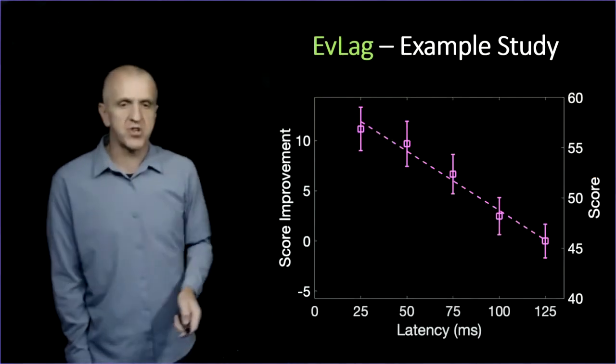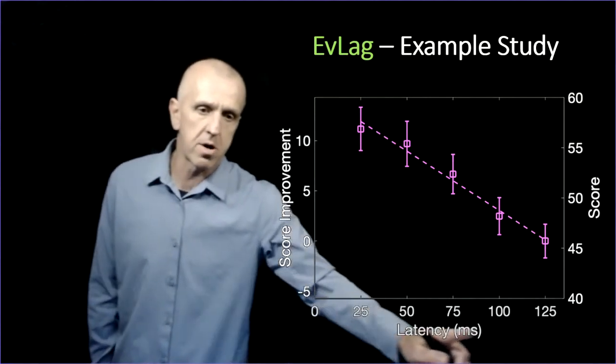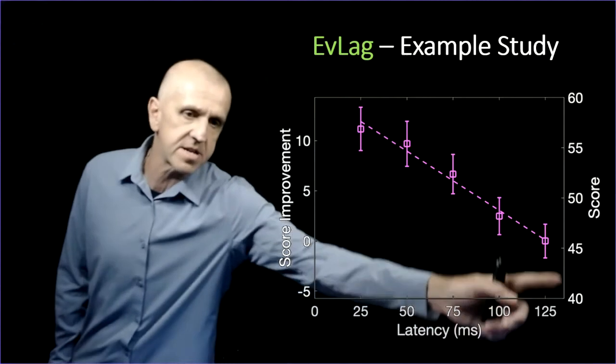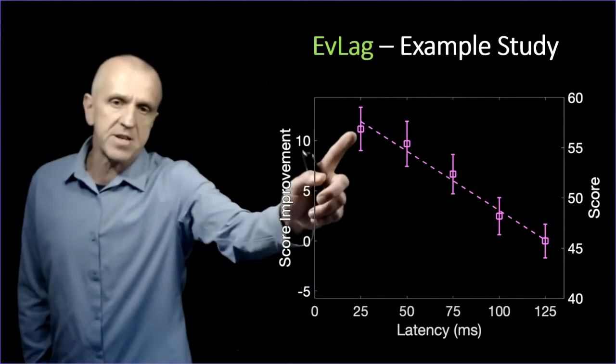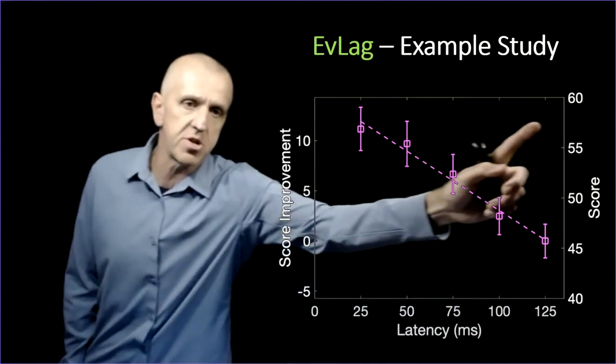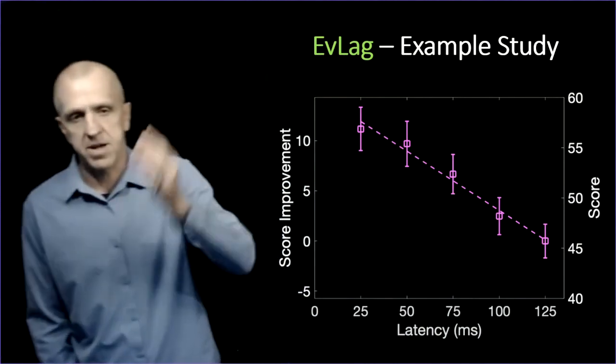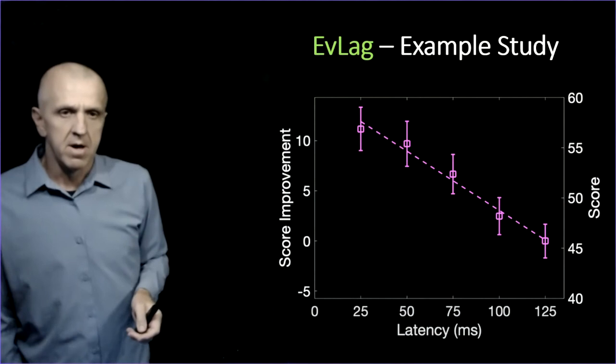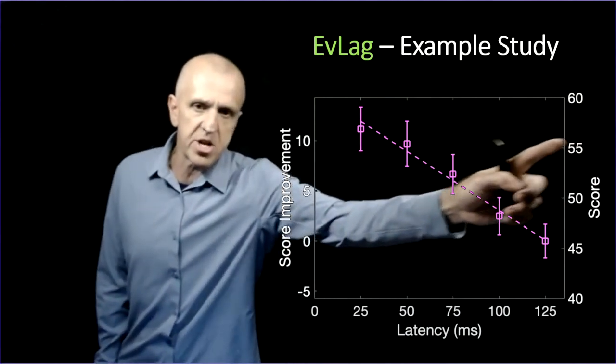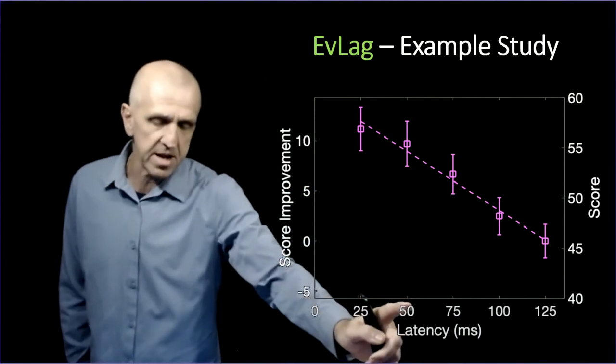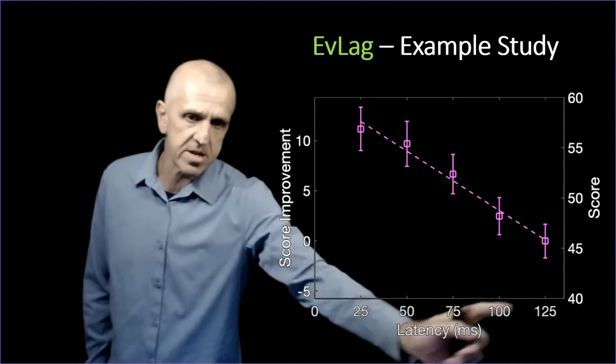This graph shows those results. Down here is my total local latency, my base system is 25. What I've plotted on this axis is the score, that's the average of those users at that latency, number of kills plus assists. Around 57 points with a confidence around that mean. This is adding 25 milliseconds of latency with EvLag, 50 and so on. Adding latency with EvLag so it's getting more lagged.